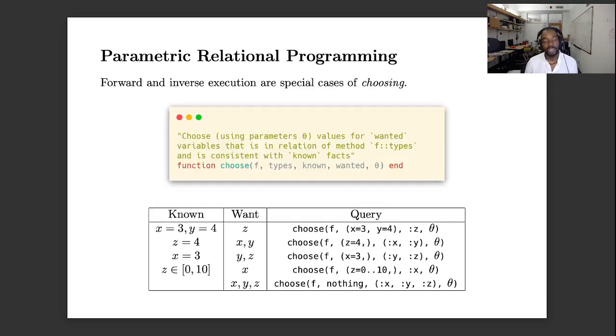And so this idea of basically choosing a value which is consistent with the relation defined by our function and the known facts and knowledge that we have and the variables that we want is kind of the key operation in this framework that we're developing. And so for each one of these queries that I showed you, there's a corresponding expression within our framework using this choose special method. And for each one of these choose queries, we do a completely fully automatic program transformation to be able to compute this answer.